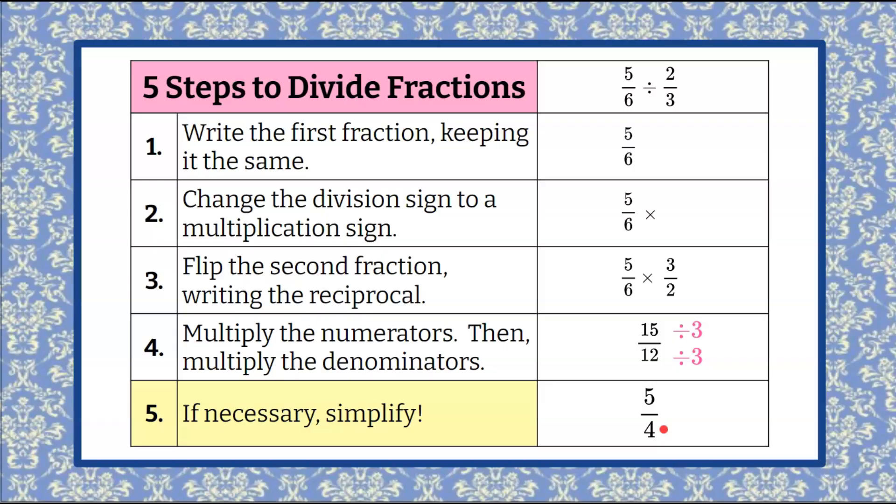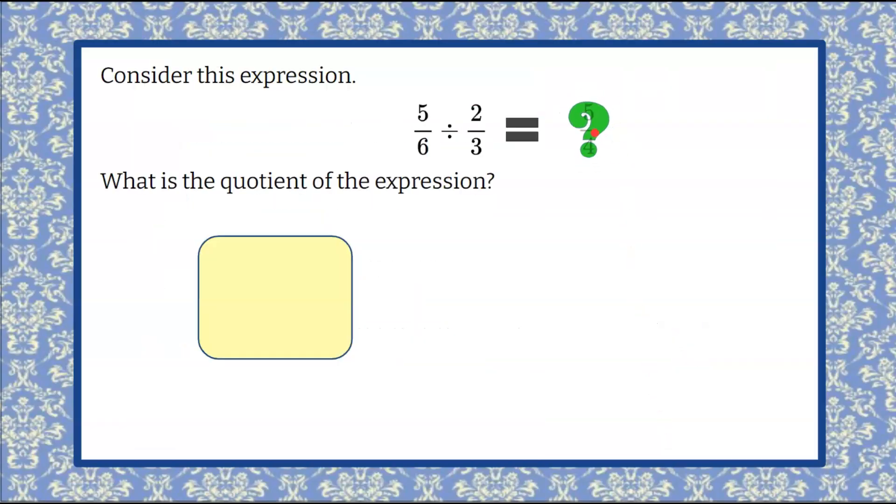So let's bring that back to our original problem and we're going to erase our question mark and put in our solution. Our quotient is 5 fourths. So let's put that in our answer box. Also understanding 5 fourths could also be written as 1 and 1 fourth. 4 goes into 5 once with 1 left over. So 1 and 1 fourth. 4 times 1 is 4 plus 1 is 5 fourths. All right.